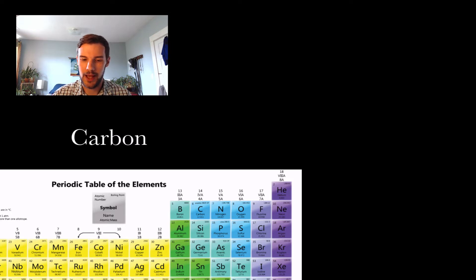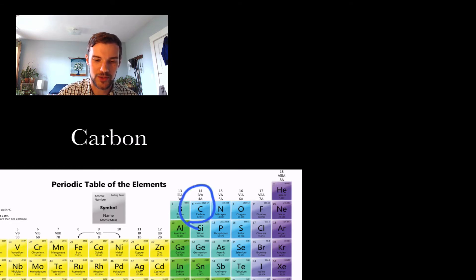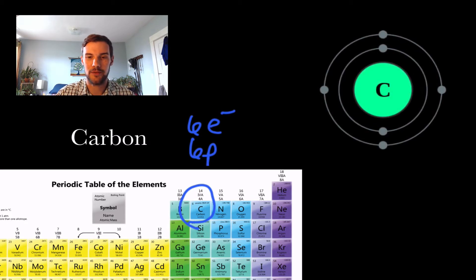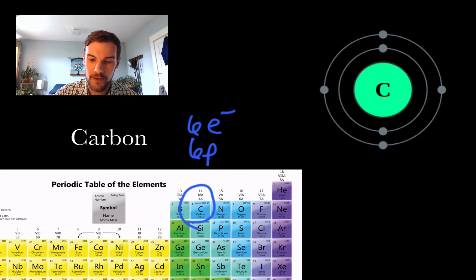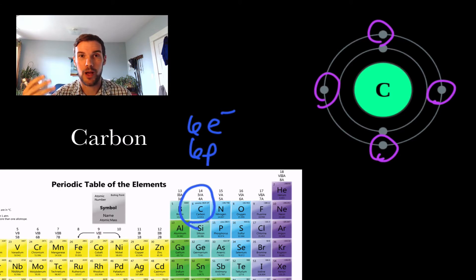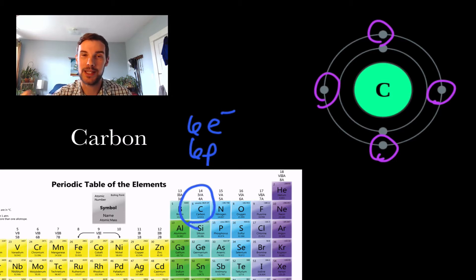Why is carbon the element present in these macromolecules? Carbon has six protons, which means six electrons — two in the inner shell and four in the outer shell, giving it four unpaired valence electrons. Because they are unpaired, they have an affinity to pair with electrons from other elements, allowing four possible bonds. Having four bonds makes carbon very stable.